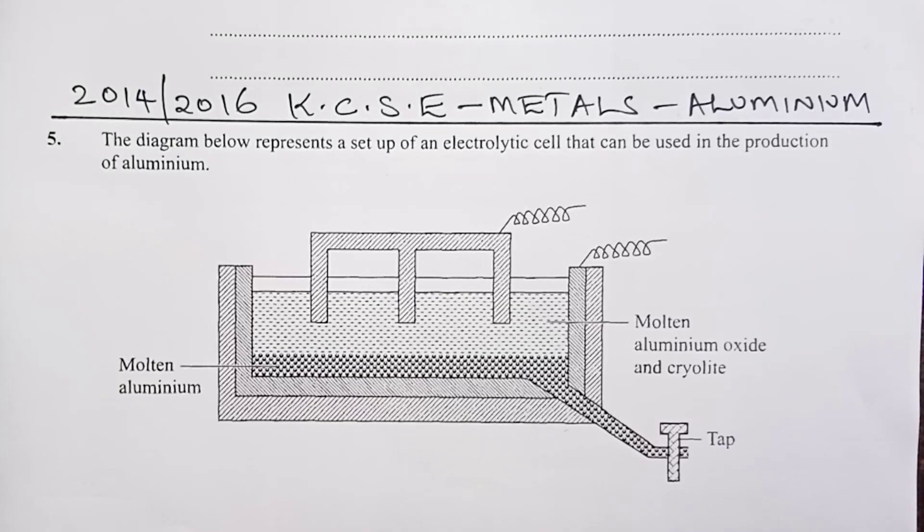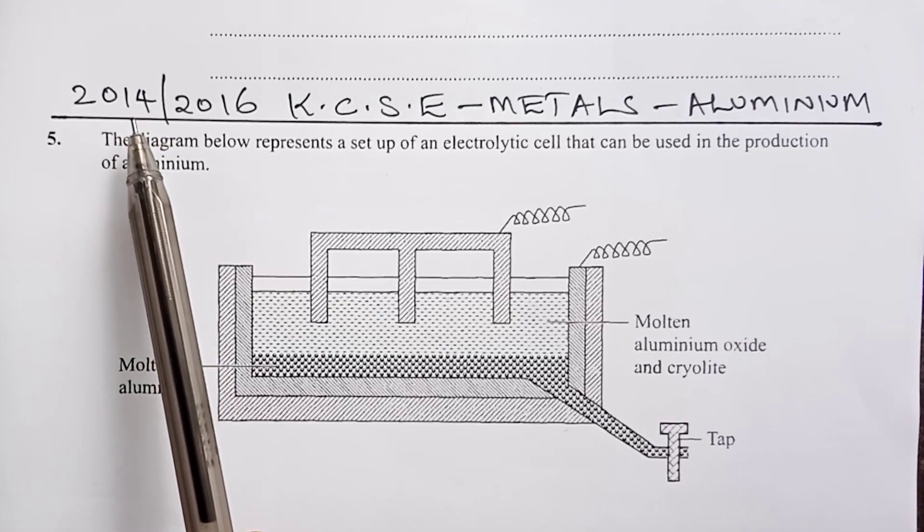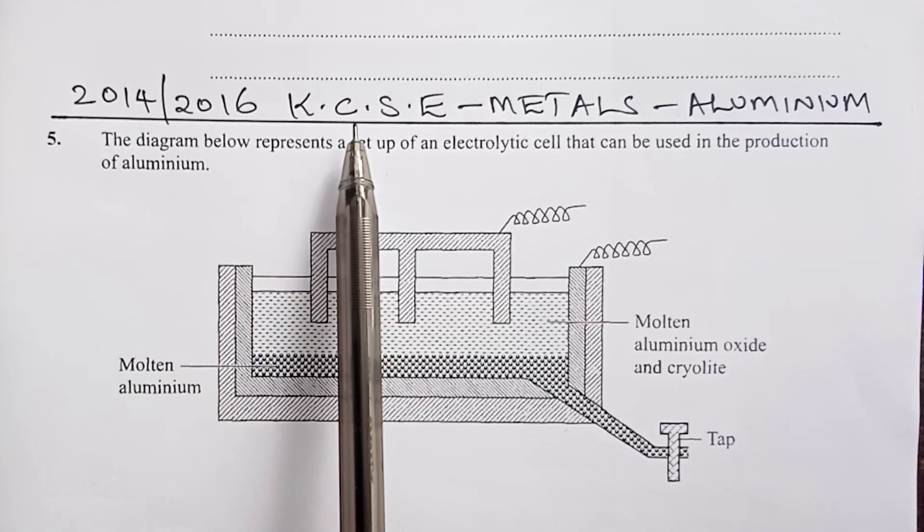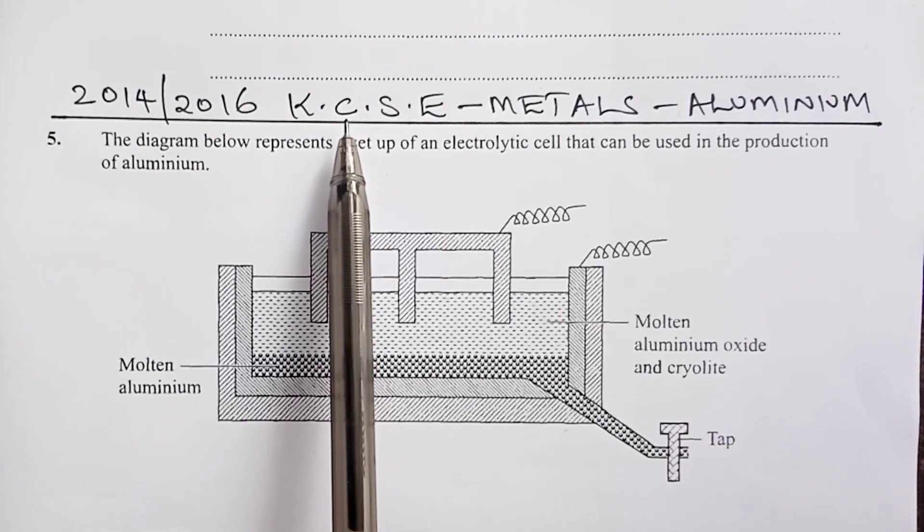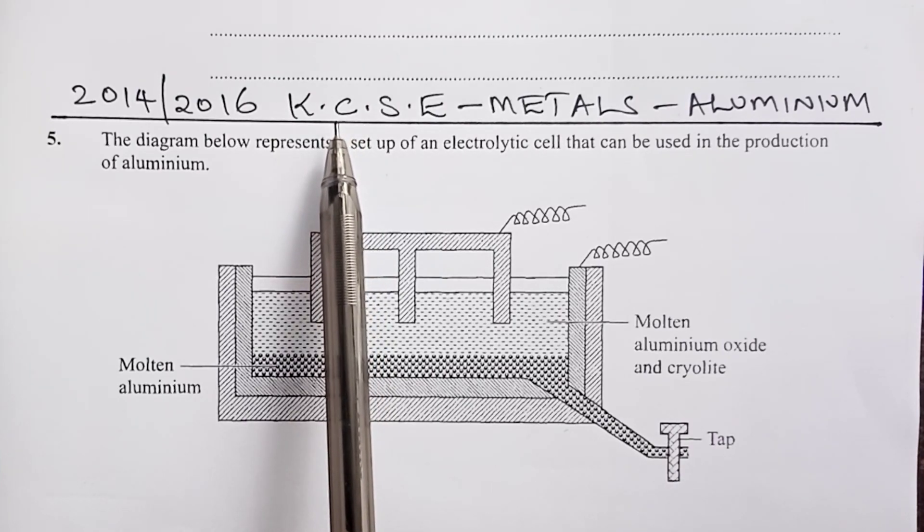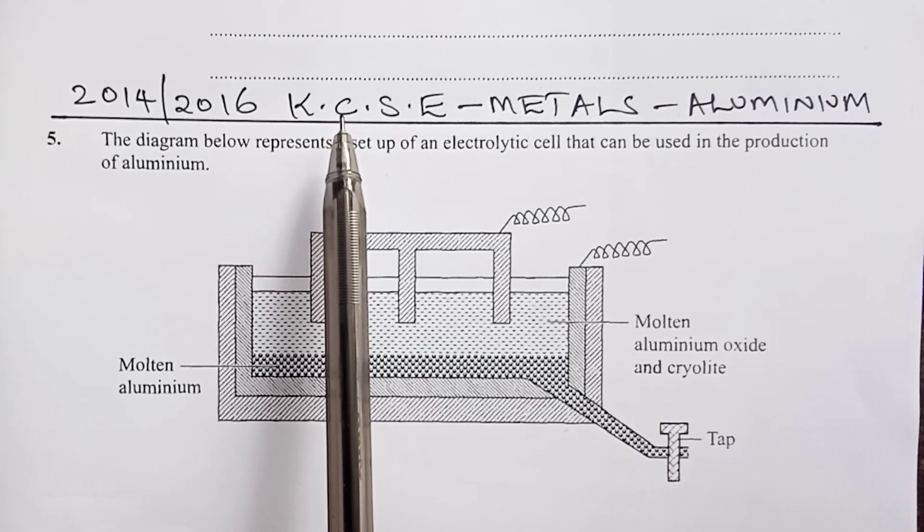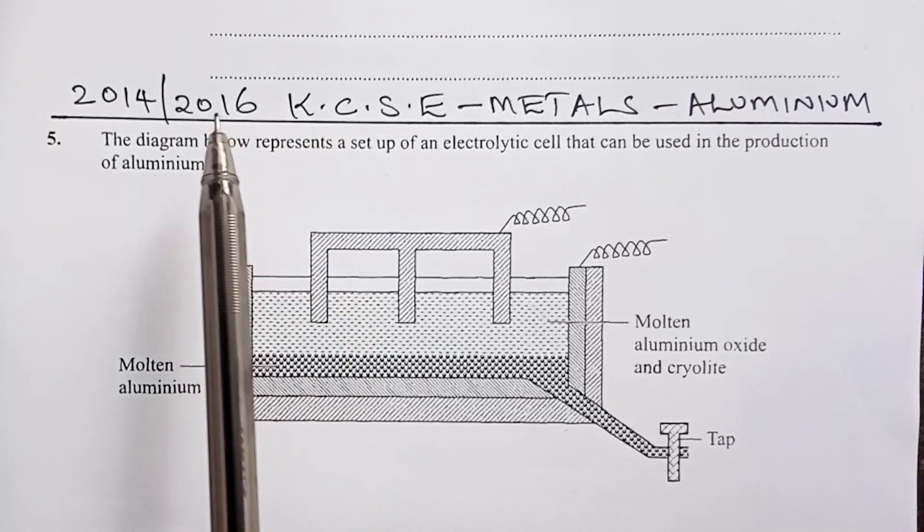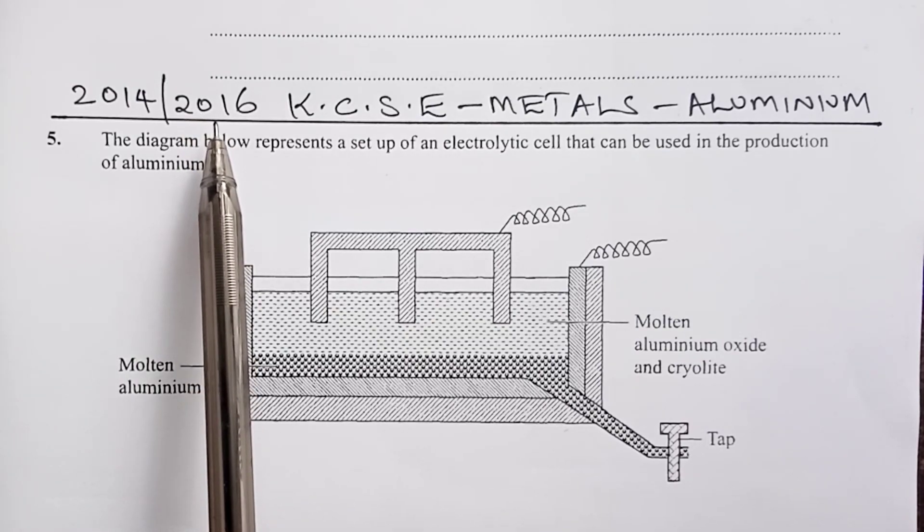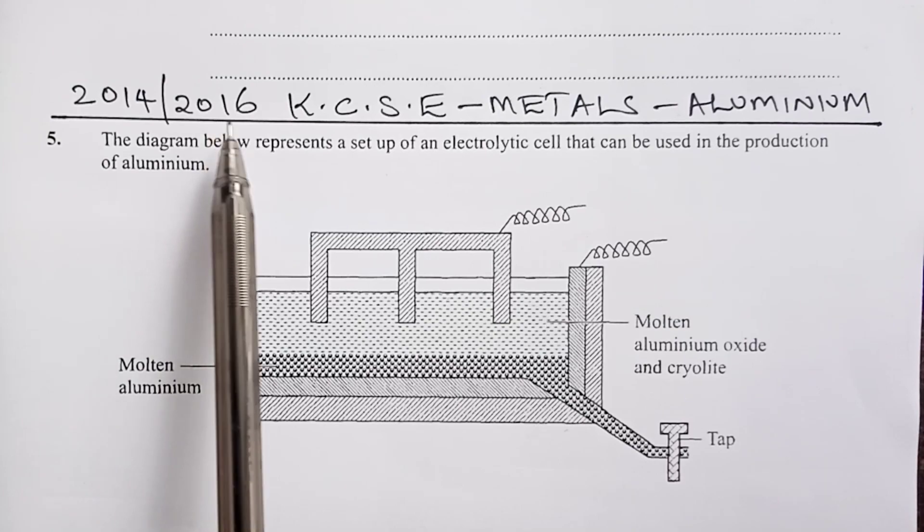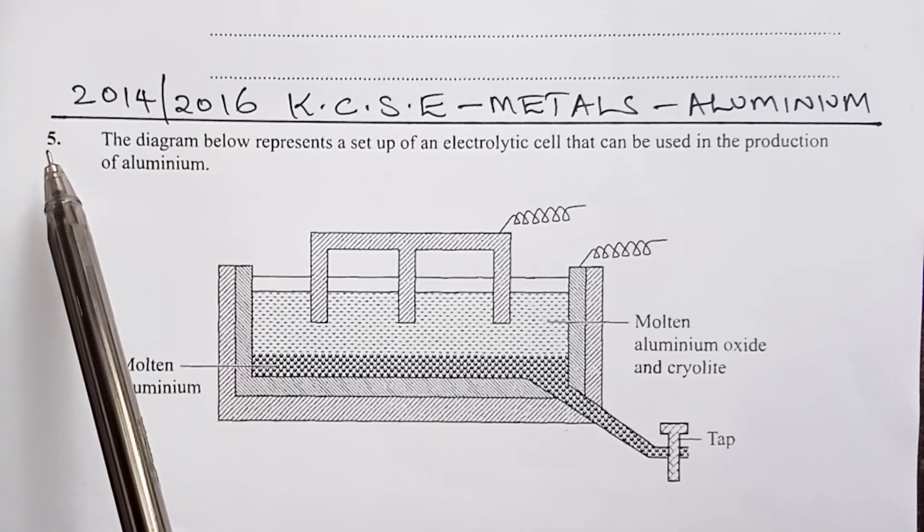Greetings. Welcome to the Kenyan teacher once again. In this video, we look at 2014 KCSE Chemistry Paper 2, question number 6 that tested on aluminum metal. The same question, word by word, was repeated in 2016 KCSE Chemistry Paper 2, question number 5.